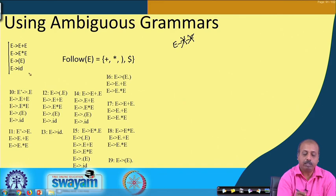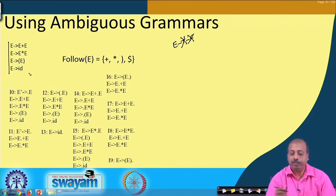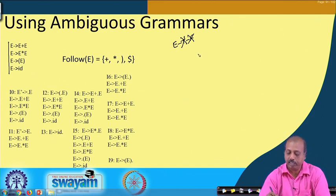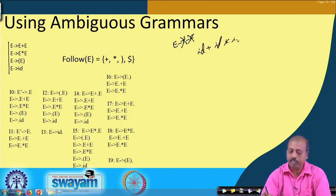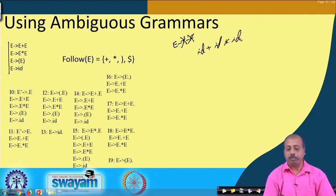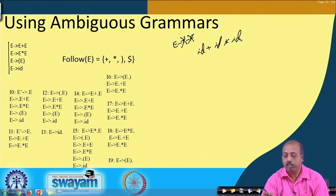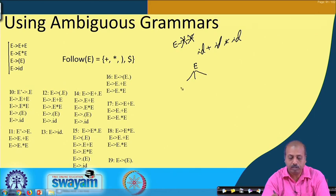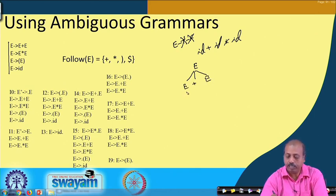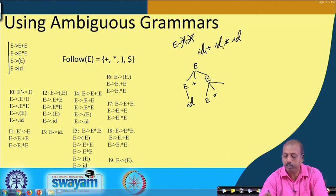Naturally, for an expression like ID plus ID star ID, we now have multiple parse trees. One decomposition is E plus E, where the left E gives ID1 and the right E gives E star E.